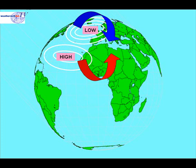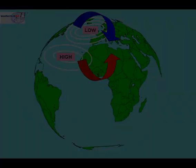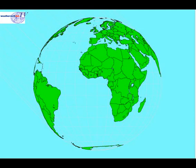In this video, we're going to concentrate on jet streams in the northern hemisphere. Jet streams occur in the area where temperature changes are at their maximum, and there are three main jet streams.